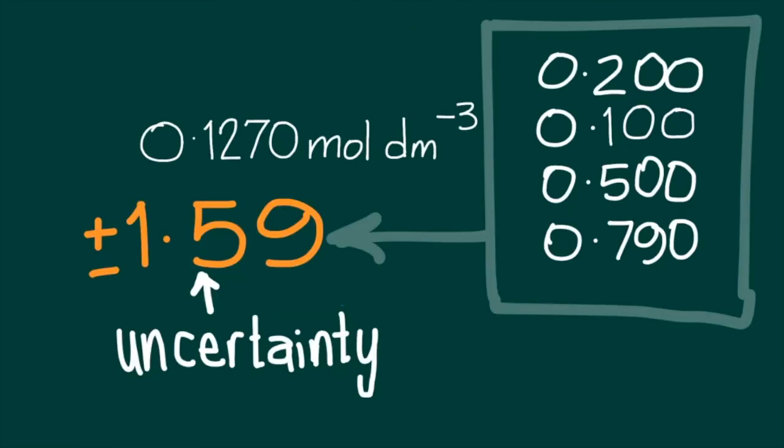But as we write up the report on this titration, we should note the uncertainty or percentage of error associated with this calculation. This is based on all of the uncertainties from all of the steps in the investigation. Taking the sum of all of these, it comes to 1.59%. So the percentage of uncertainty is plus or minus 1.59%.